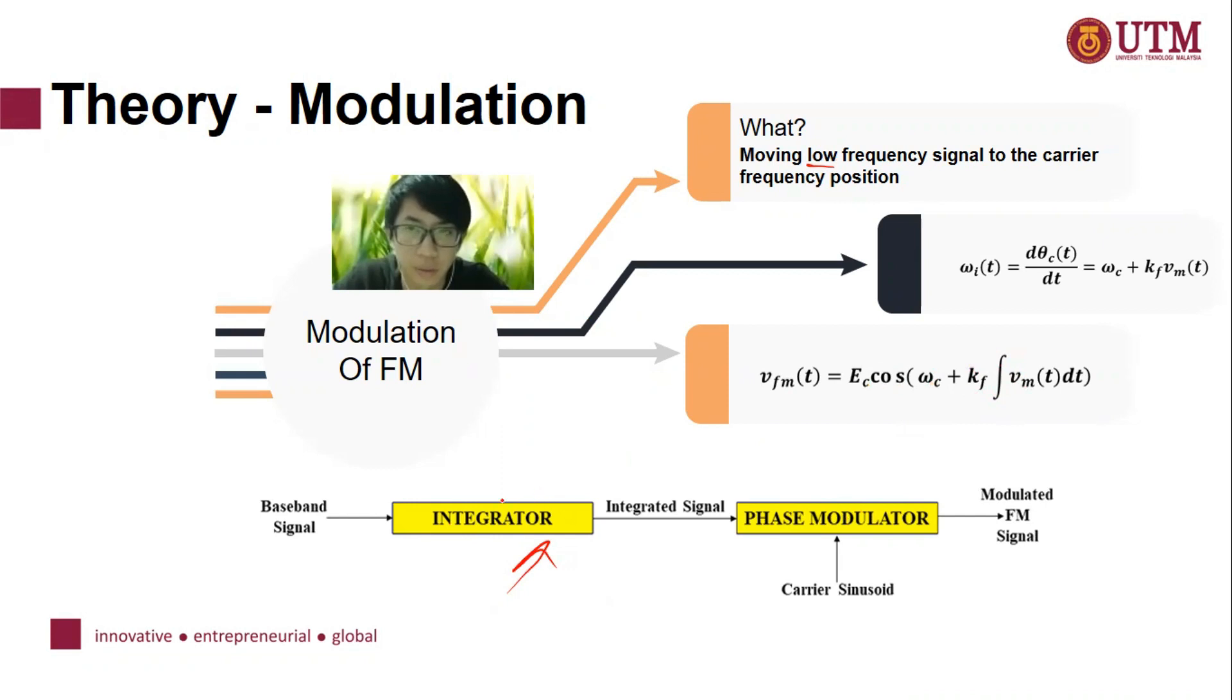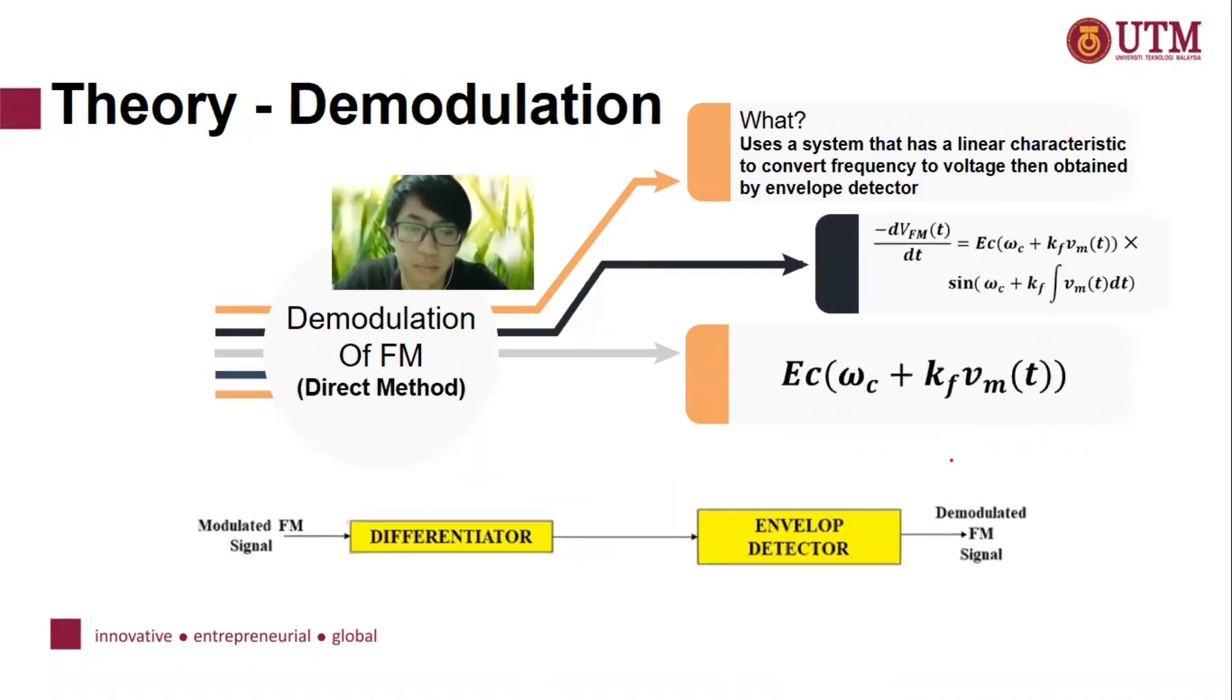The second one is demodulation. Demodulation uses a system that has a linear characteristic to convert frequency to voltage then obtained by envelope detector.